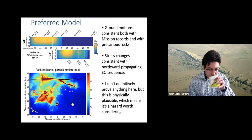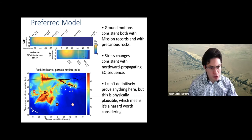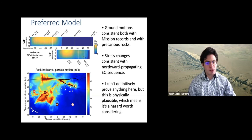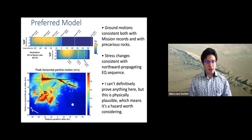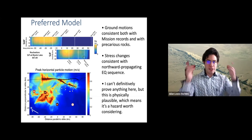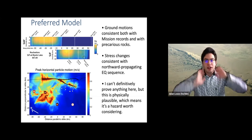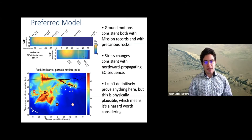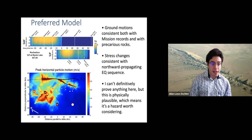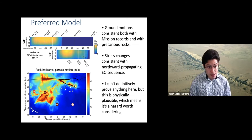Of course I can't prove this — this is a model, I can make it do anything. But the fact that it is consistent with all of these different forms of observation says that it's physically plausible, which means it's a hazard worth considering: that a 7.5 multi-fault rupture is just as plausible for this area as a 7.5 San Andreas-only rupture. This is completed work — my 2016 paper in Science Advances.